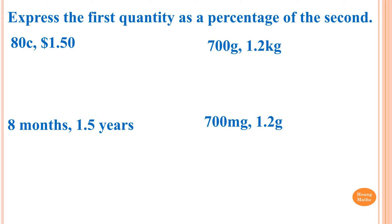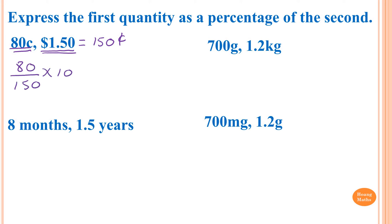First practice question: 80 cents and a dollar fifty. This is 80 cents and dollars, so convert $1.50 to cents first — that becomes 150 cents. Now just go 80 over 150 times by 100 percent, which gives 53 and one-third percent.